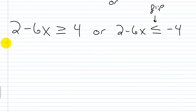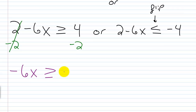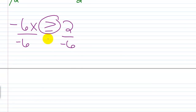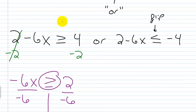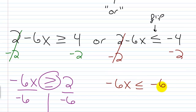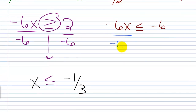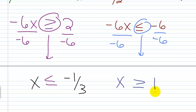For the first scenario, subtract 2 from each side — that cancels, giving negative 6x is greater than or equal to 2. Divide each side by negative 6, and remember when you do that you have to flip the direction of the inequality. So instead of greater than or equal to, that becomes less than or equal to. We get x is less than or equal to negative 1 third. For the second scenario, subtract 2 from each side — that cancels, giving negative 6x is less than or equal to negative 6. Divide each side by negative 6 and flip the direction again: x is greater than or equal to 1.